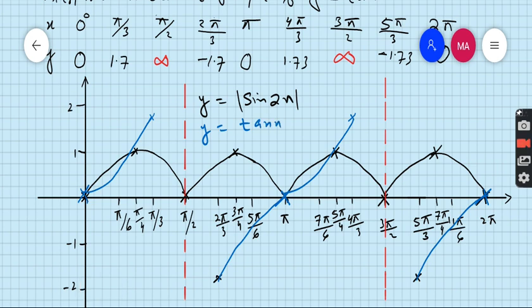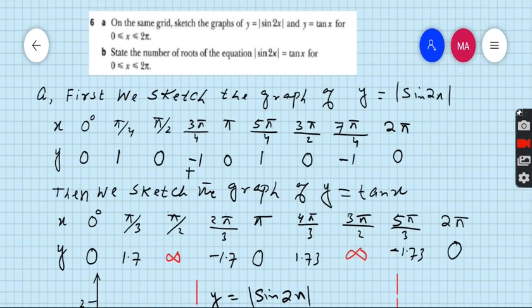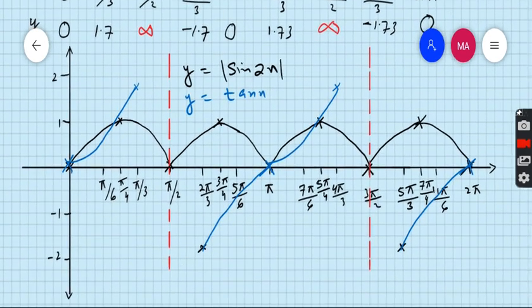Now see the next part, part b. State the number of roots of the equation sin 2x equals tan x for 0 to 2 pi. See how many points where two curves are cuts each other. See point number 1, this one. Point number 2, this one.